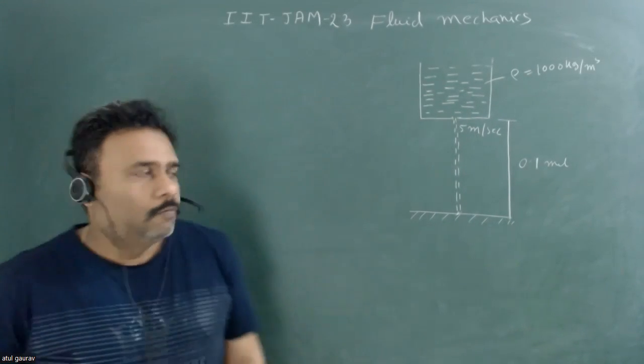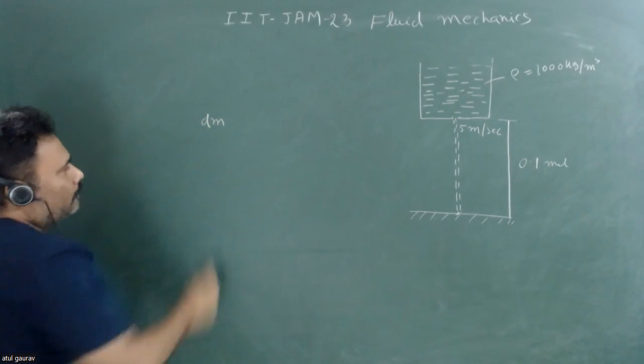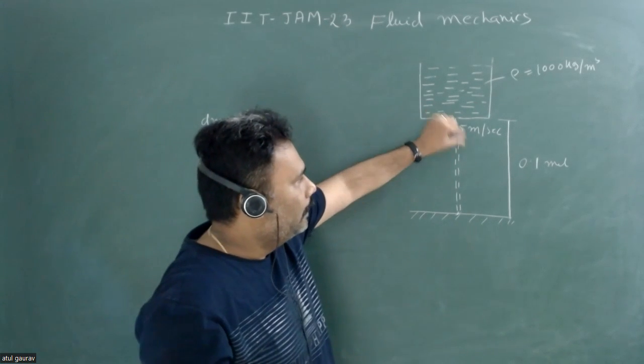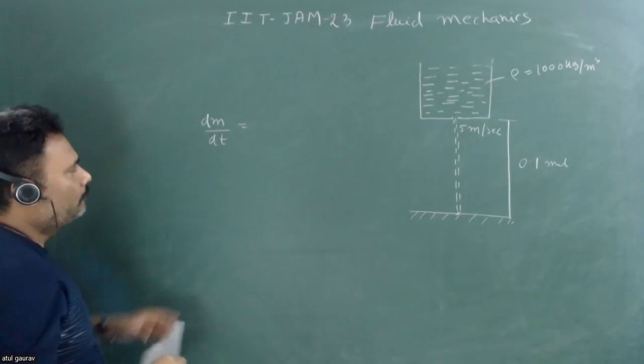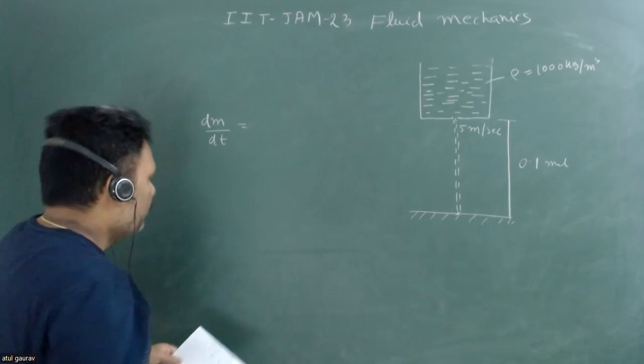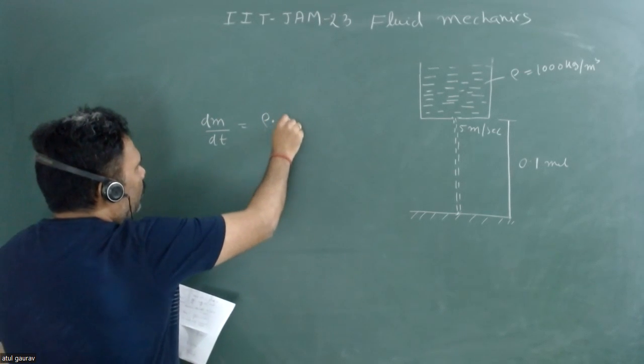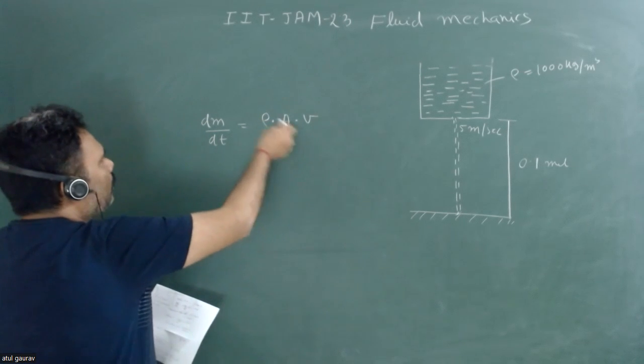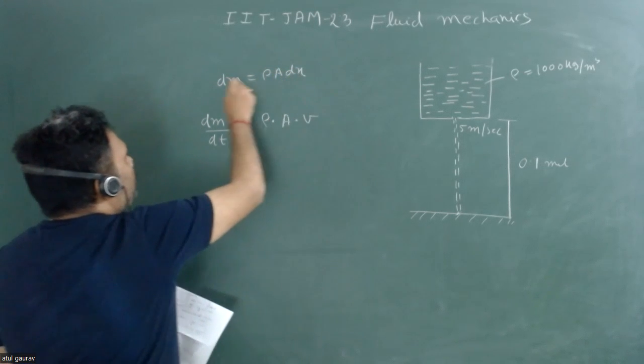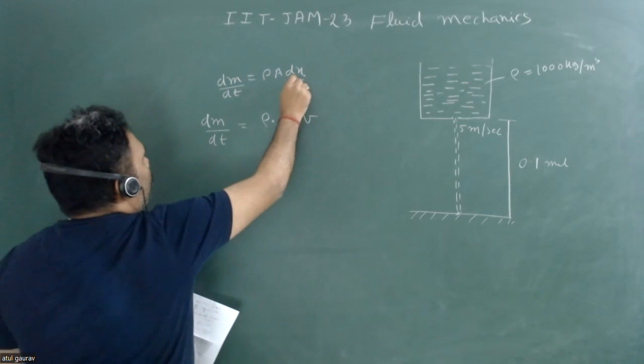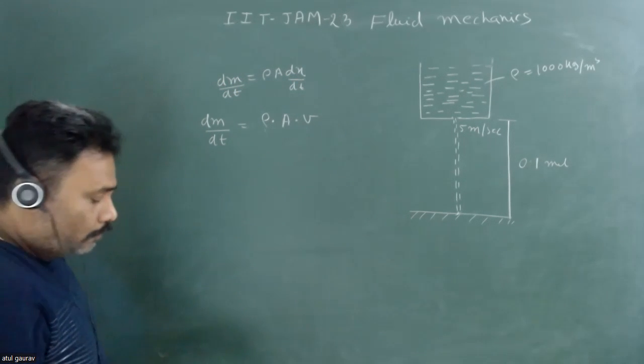We have to first calculate the mass flow rate. We can assume that dm mass is coming in time dt, so dm/dt, the rate of mass flow, is given by ρ into area into v. We can calculate this because dm = ρ × area × dx, and dm/dt involves dividing by dt.